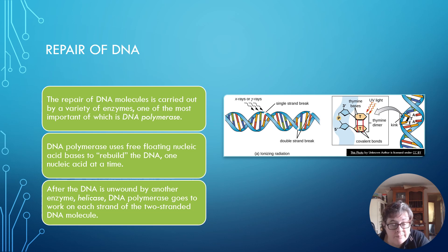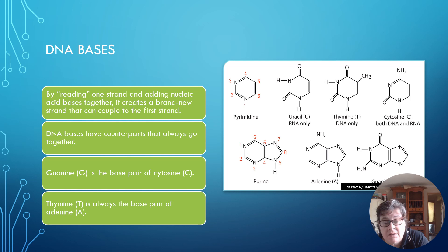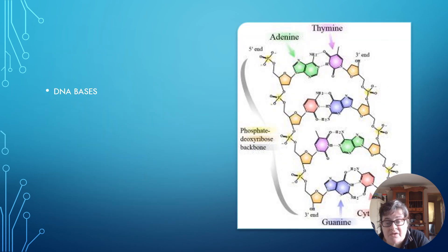After the DNA is unwound by another enzyme, helicase, DNA polymerase goes to work on each strand of the two-stranded DNA molecule. DNA bases include thymine, cytosine, adenine, and guanine; there is also uracil, which is in RNA — a pyrimidine and a purine. By reading one strand and adding nucleotide bases, it creates a brand new strand. DNA bases have counterparts: guanine pairs with cytosine, thymine pairs with adenine in DNA, and in RNA uracil pairs with adenine. This is the phosphate deoxyribose backbone of DNA.